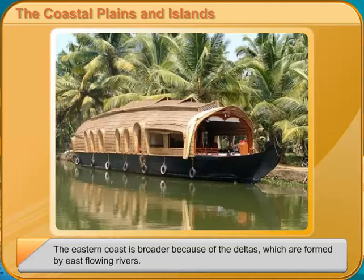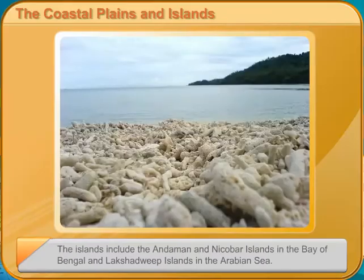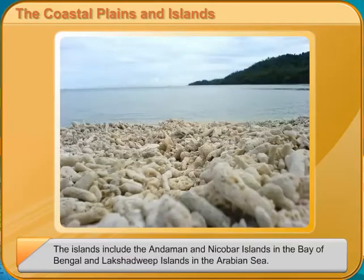The Andaman Islands are volcanic in origin, while the Lakshadweep Islands were formed by corals. All these physical divisions together form a single geographical region — the nation of India.